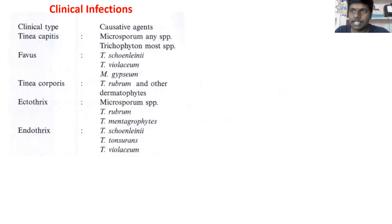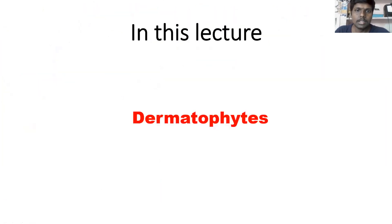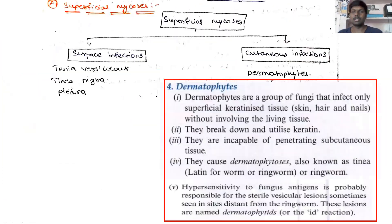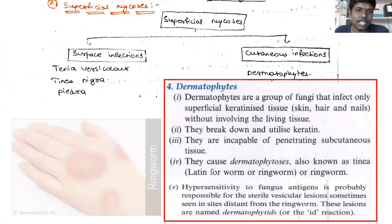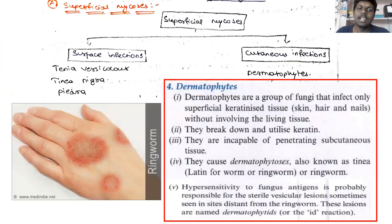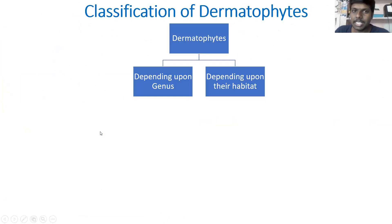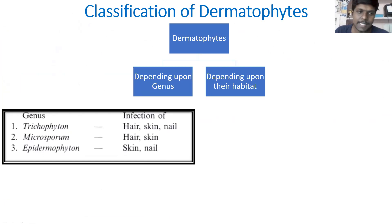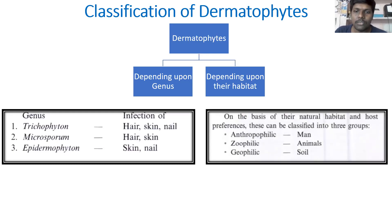Quick review of today's lecture: all dermatophytal infections are called ringworm infections due to the ring-like appearance on the skin. They are classified into two types — depending upon genus: Trichophyton, Microsporum, and Epidermophyton species; and depending upon habitat: anthropophilic (present in man), zoophilic (present in animals), and geophilic (present in soil).